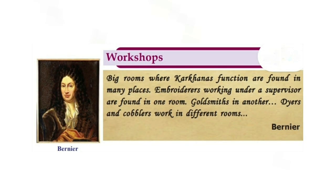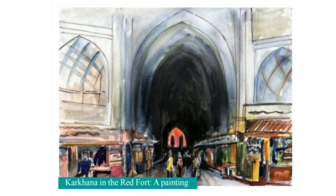Now we are going to study about the workshops. Here is French traveller Bernier, who reached India in the Mughal period: 'Big rooms where Karkhanas function are found in many places. Embroiderers working under a supervisor are found in one room, goldsmiths in another, dyers and cobblers work in different rooms.' Karkhanas are large buildings containing many small rooms where different workers — cobblers, dyers, embroiderers — work for the Mughal kings and nobles.